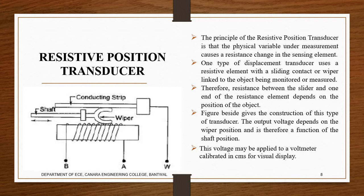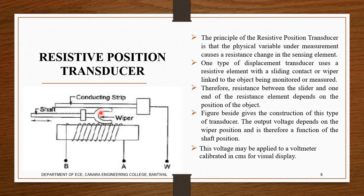Another type is the resistive position transducer. It has a wiper and a conduction strip. When the shaft pushes the wiper to maximum contact with the strip, all the energy is transferred. When it is moved back, there is no contact and no energy transfer — so the amount of contact determines how much energy is passed.